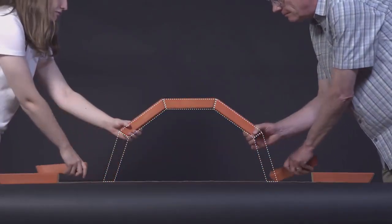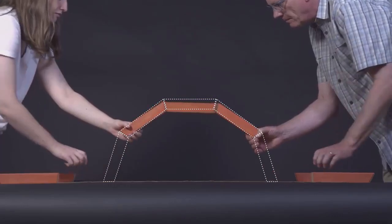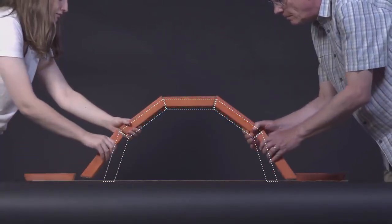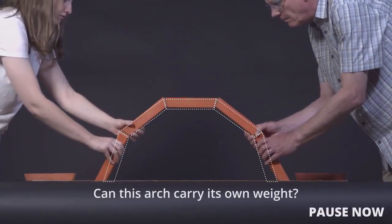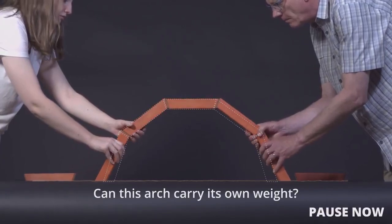To make you think even harder, suppose we modify the ends of this thin arch so that they lean further outwards. Can the new shape support its own weight? It can, but are you able to explain this curious result?